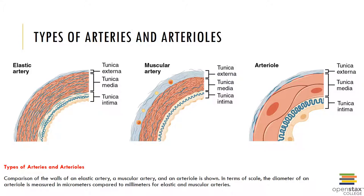Muscular arteries are also known as distribution vessels. They deliver blood to specific body organs like the renal artery, mesenteric artery, and gastric artery. The tunica media of muscular arteries has relatively more smooth muscle and less elastin than elastic arteries. These vessels are very active in vasoconstriction and are also less distensible.